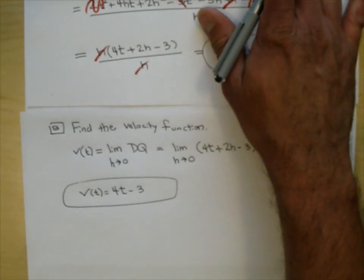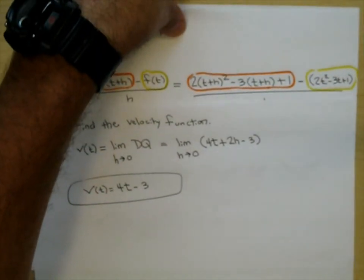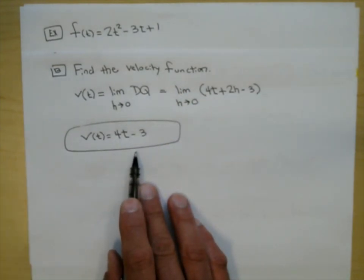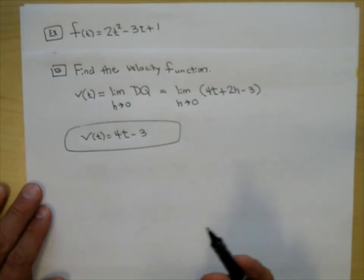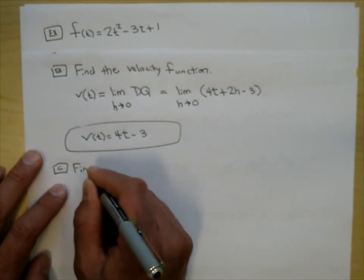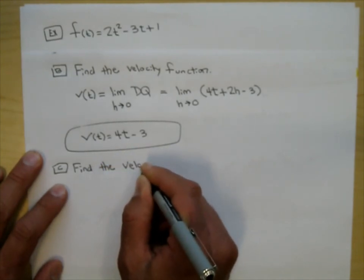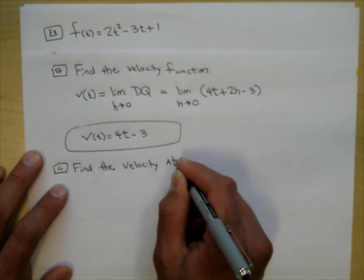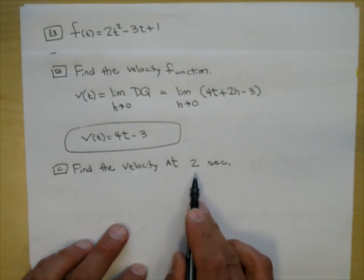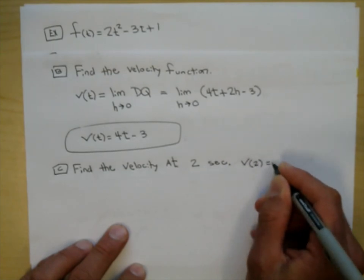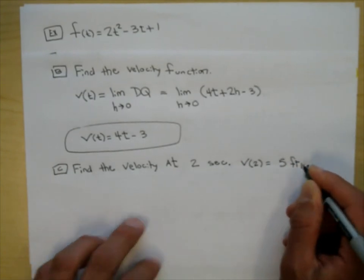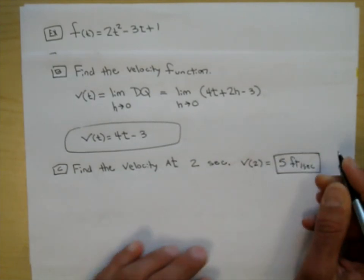Part C says: find the velocity of the bug at 2 seconds. You put 2 into the velocity function: V of 2 is 4 times 2 minus 3, which is 8 minus 3, which is 5 — 5 feet per second. Do you see how quick Part C is once you have the velocity function?